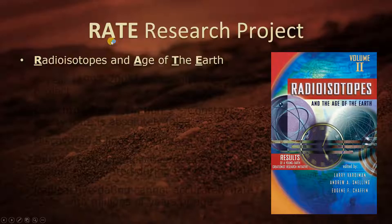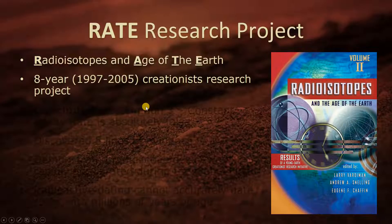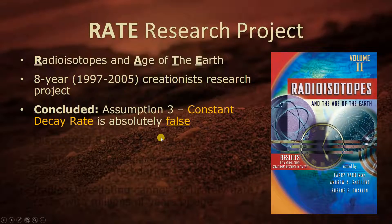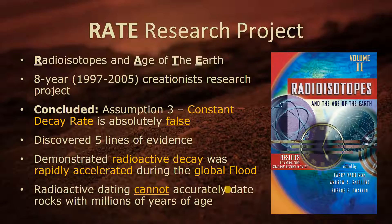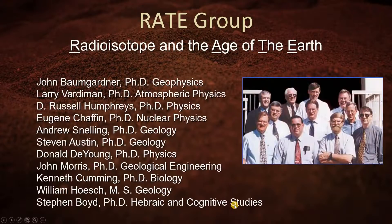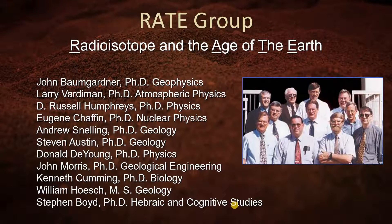The RATE Research Project — RATE stands for Radioisotopes and the Age of the Earth. It's an eight-year creationist research project from 1997 to 2005. They concluded that Assumption 3, the constant decay rate, is absolutely false. They discovered five lines of evidence and demonstrated radioactive decay was rapidly accelerated during the global flood, and that radioactive dating cannot accurately date rocks with millions of years of age. The RATE group included Ph.D. scientists in geophysics, atmospheric physics, nuclear physics, geology, geological engineering, and biology.